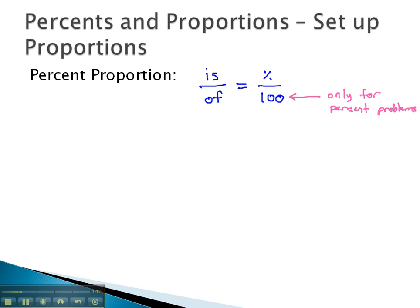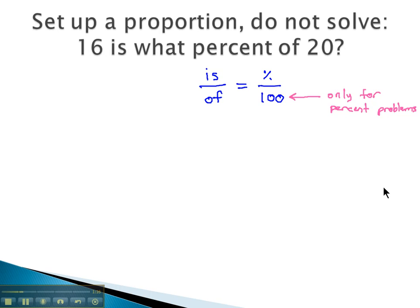But with percent problems, is over of equals percent over 100. So if we have a percent problem such as 16 is what percent of 20, what we're going to do is divide this sentence up into three parts. And the parts are split up after every other word.